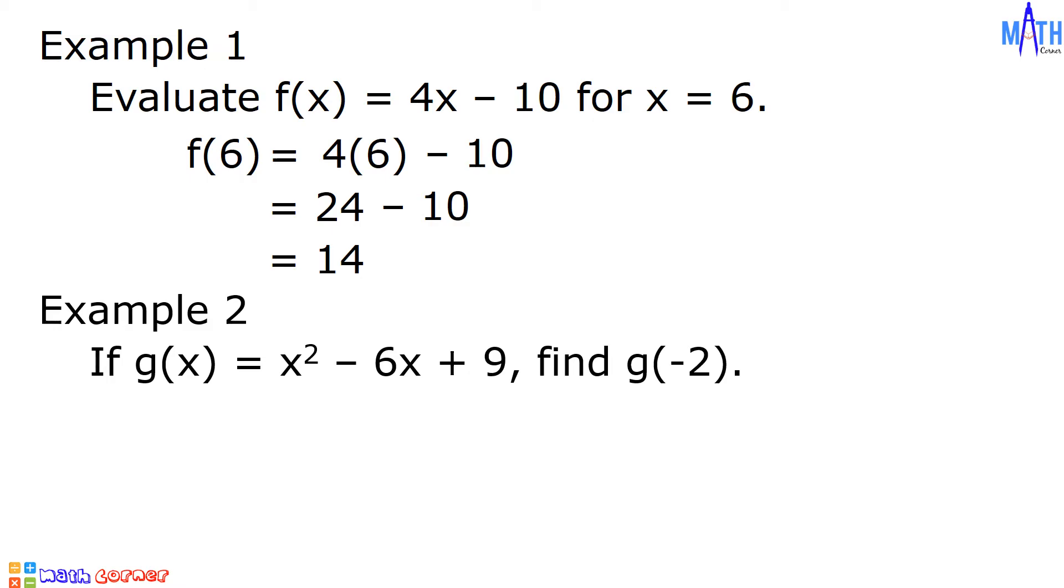Let us replace x by negative 2. g(-2) = (-2)² - 6(-2) + 9. Let us simplify. Square of negative 2 or negative 2 times negative 2 is equal to positive 4. Negative 6 times negative 2 is equal to positive 12 plus 9. 4 plus 12 plus 9 is equal to 25, and 25 is the answer.